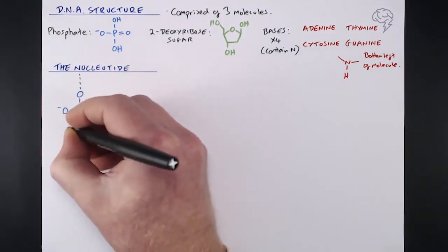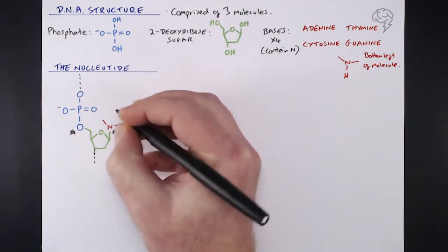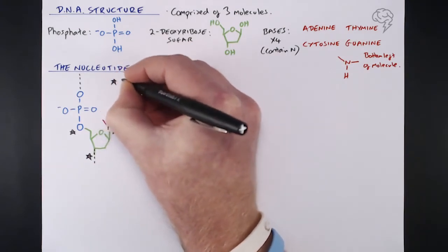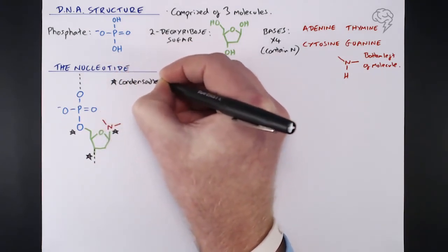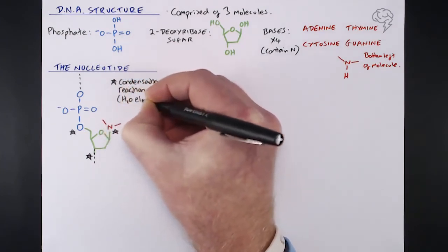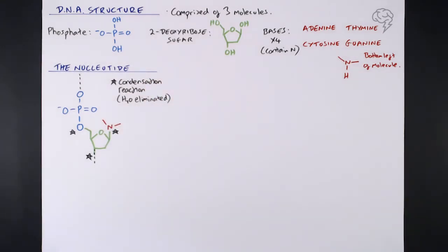Where our three bonds occur, I'm putting little black stars — that's where each of these three molecules is bonded to each other. They all have one thing in common: they are all condensation reactions. A condensation reaction is where a small molecule is eliminated when those bonds form — in this case it's water, H₂O. So three condensation reactions occur when a nucleotide is formed.